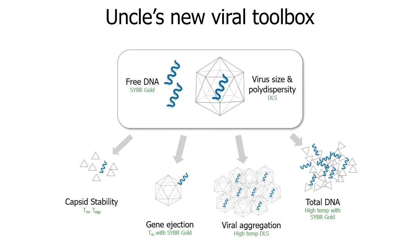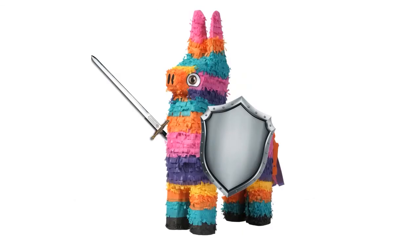Using UNCLE's two lasers and full-spectrum fluorescence, you can look at both pathways of AAV stability — genome ejection and capsid disruption. DLS provides sample quality assessment before thermal ramp and aggregation quantification afterward. The CyberGold fluorescence metric tracks free DNA prior to thermal ramp and total DNA released after. Most of this information is available in just one experiment using only one nine-microliter volume of sample. With all this UNCLE data, you can create an AAV that's ready for battle and won't aggregate or fall apart under stress.